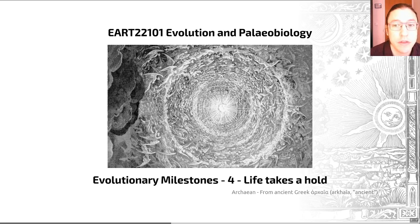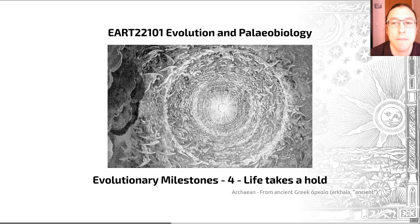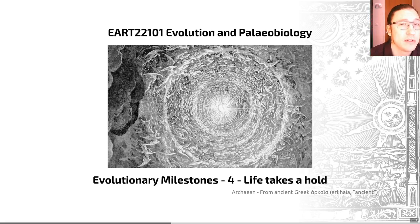The Archean Eon is a period of time in Earth history that lasted from about 4,000 to about 2,500 million years ago. Bear in mind that this has nothing to do with the group of organisms, the Archea, which we met in the previous videos, except linguistically.